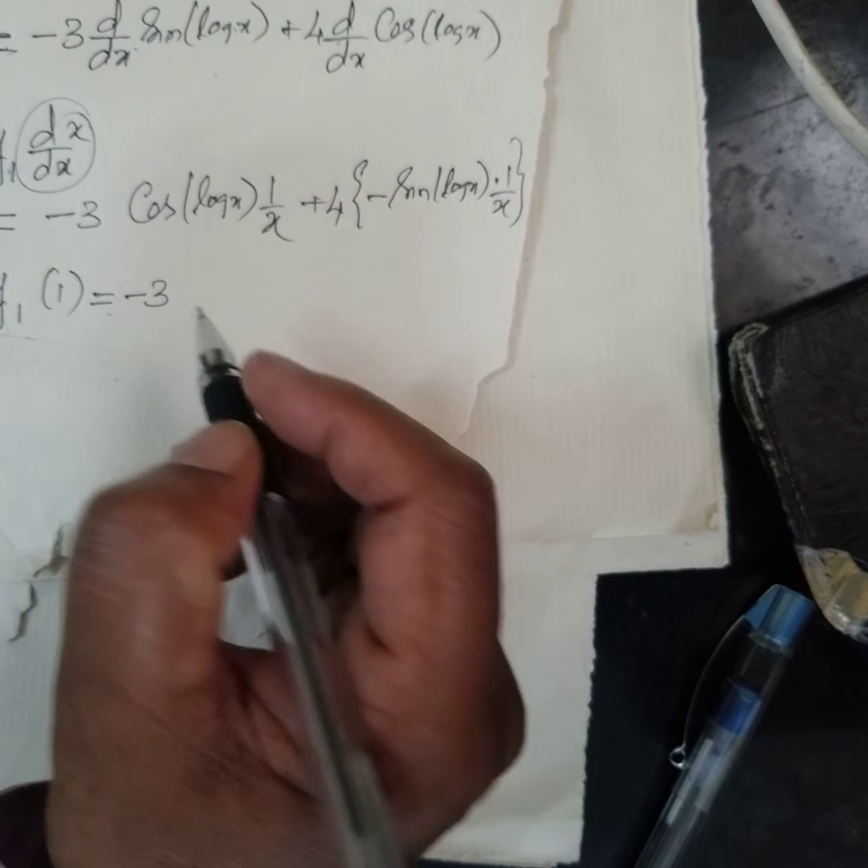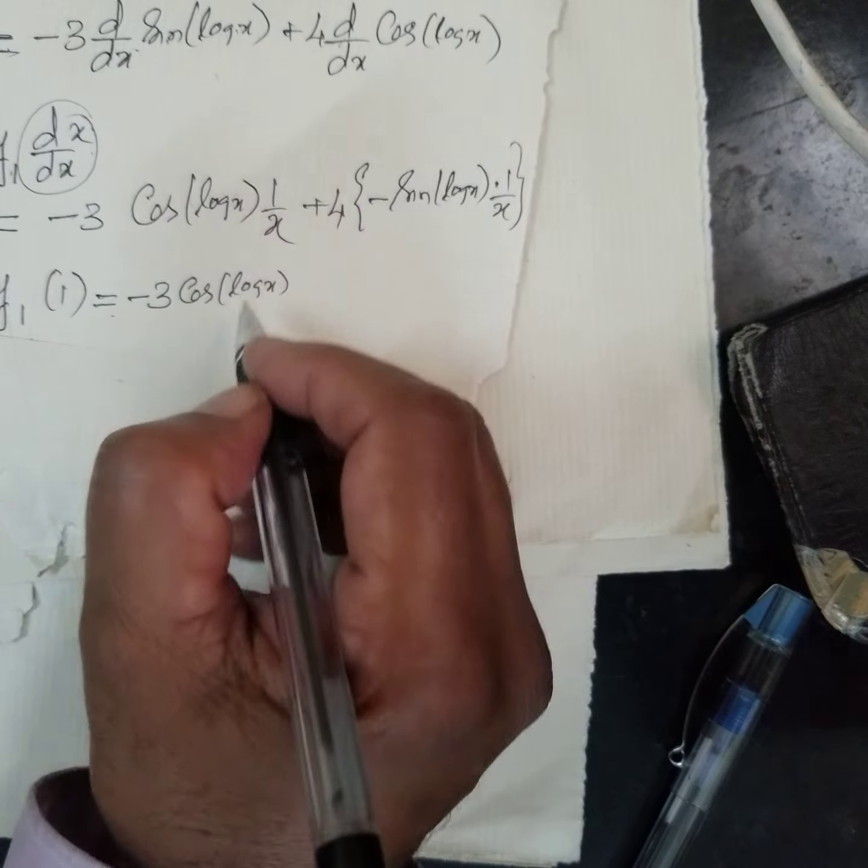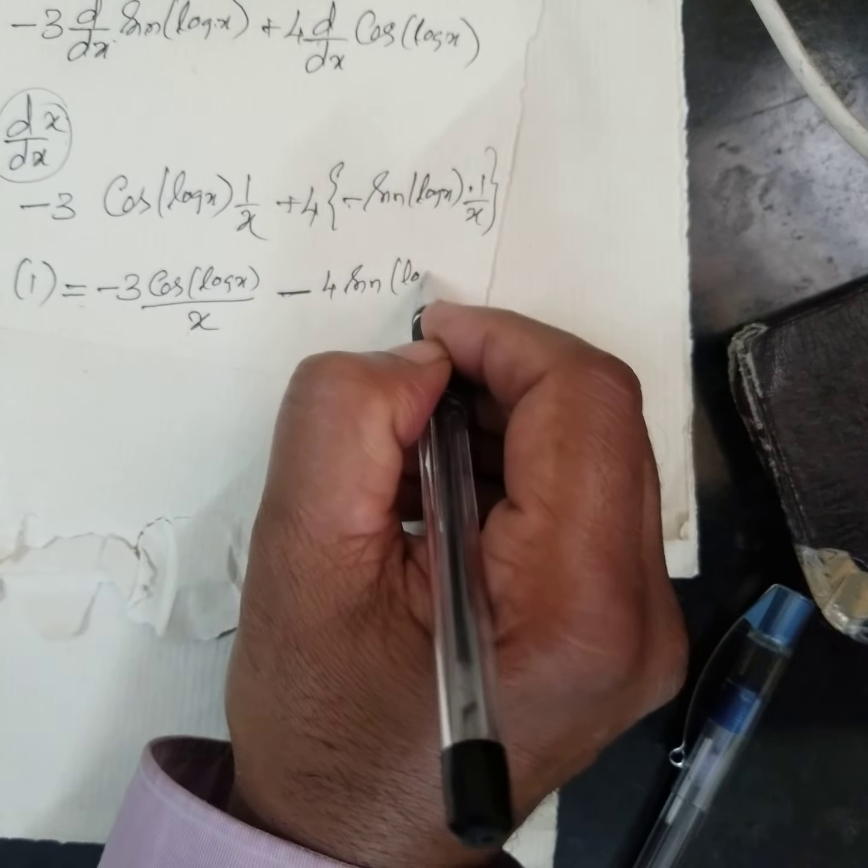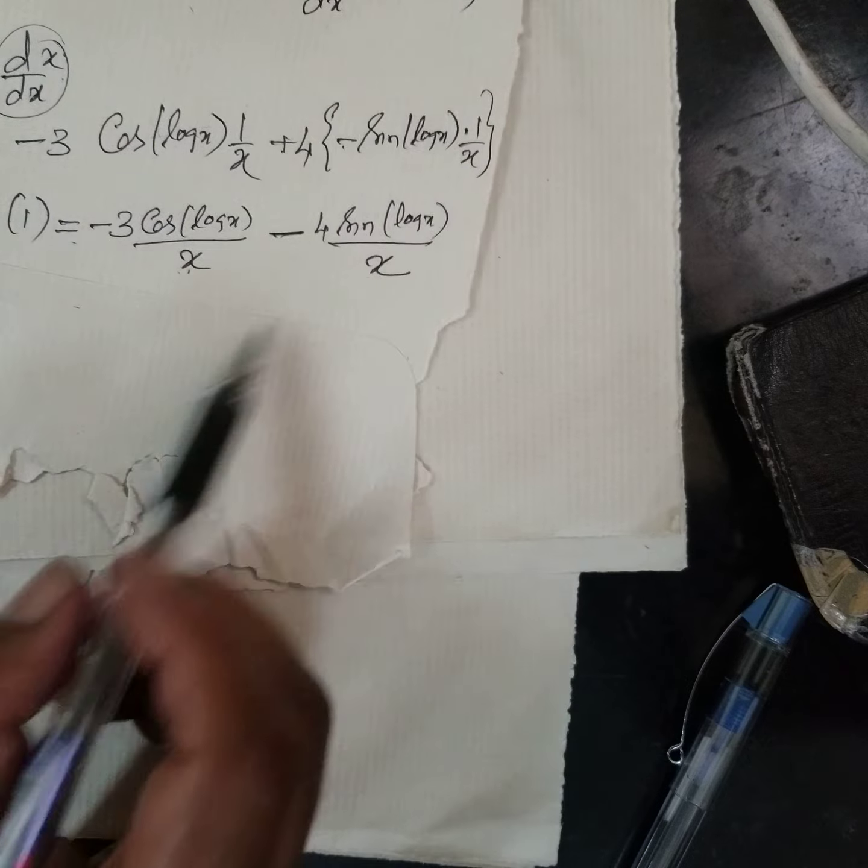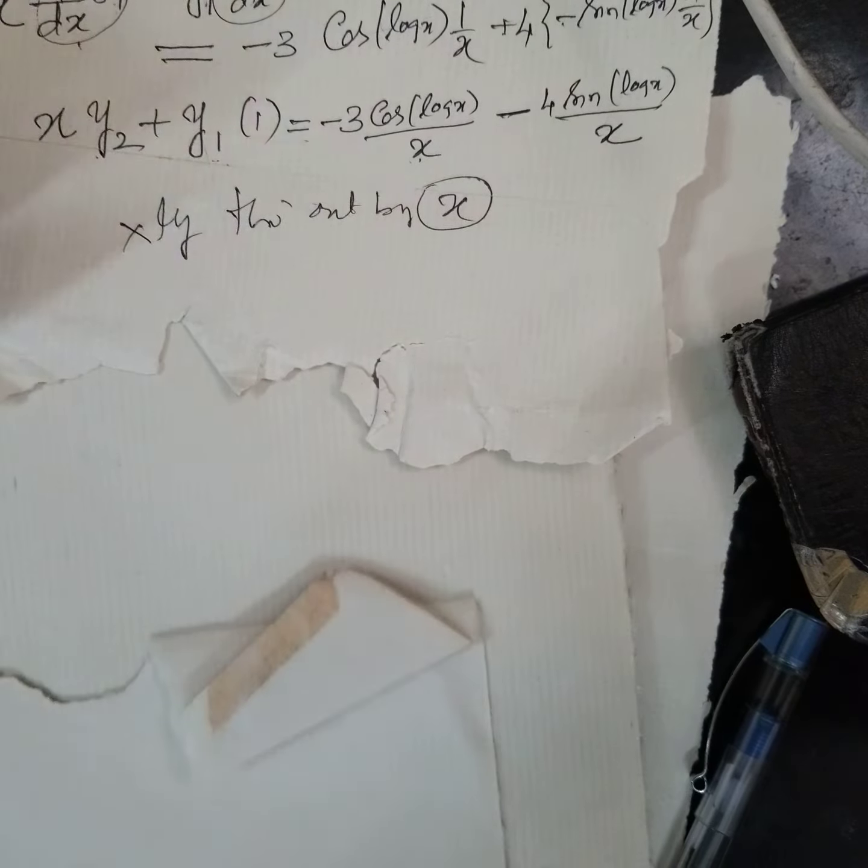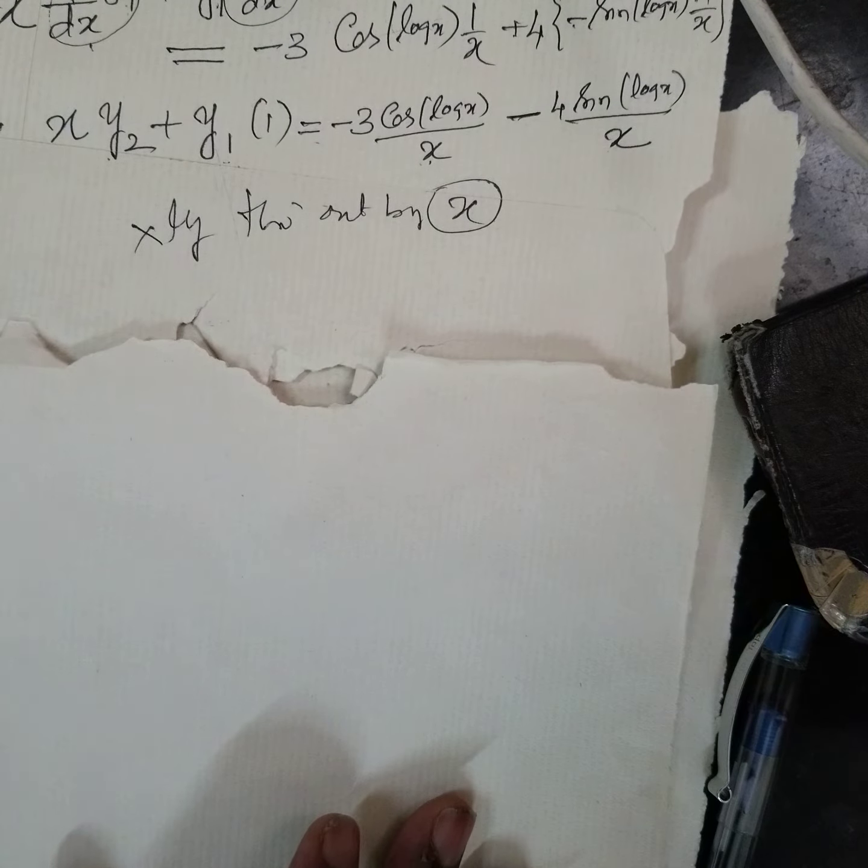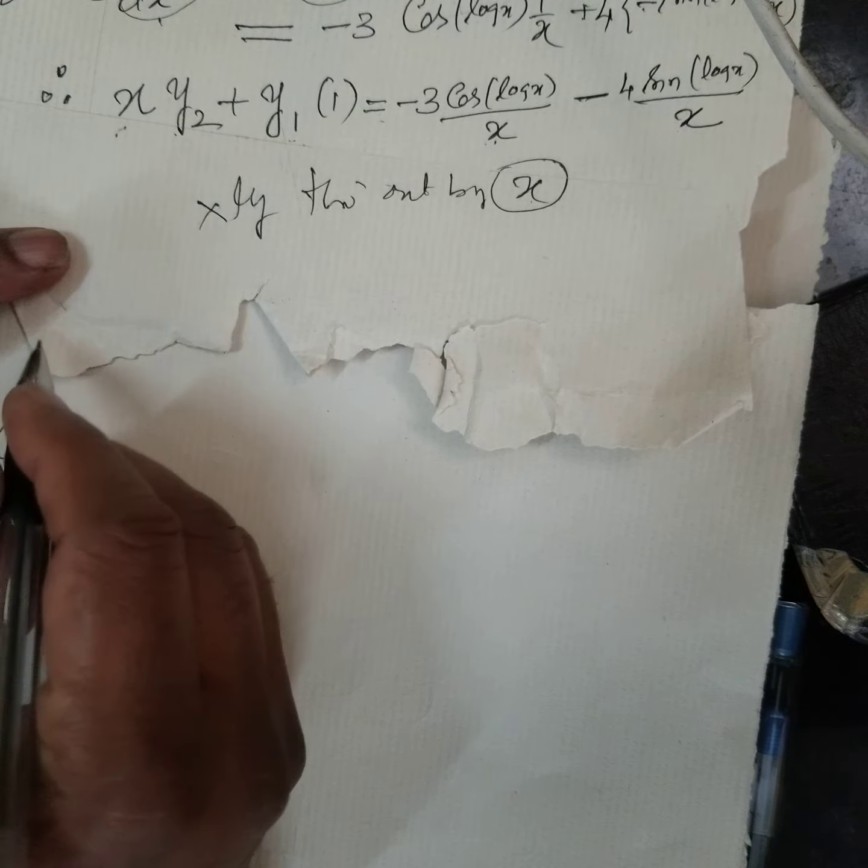So you have to be very careful in this place. Differential coefficient of y1 is what? Y2, plus y1. Dx x by dx is called 1. This is equal to what? Minus 3 cos log x. Don't cancel this. This is inside cos. Therefore, this is x. There, minus is there. Minus 4 sin log x divided by x. Now, what you got today is, multiply again throughout by x.